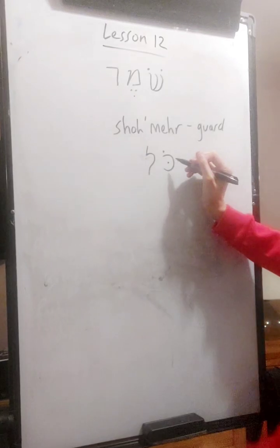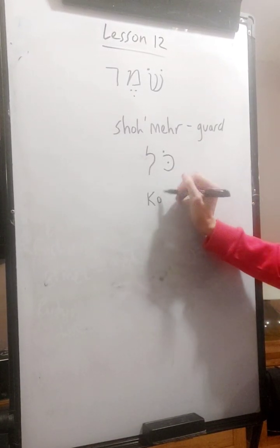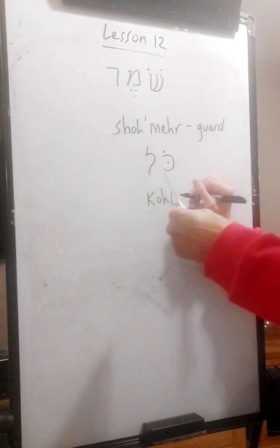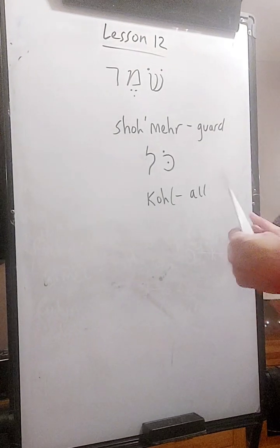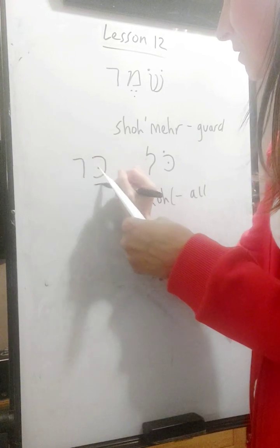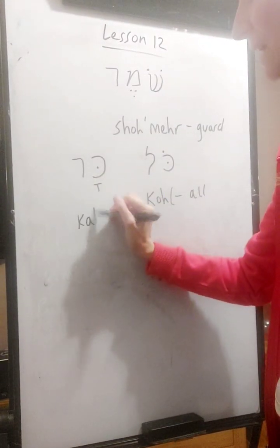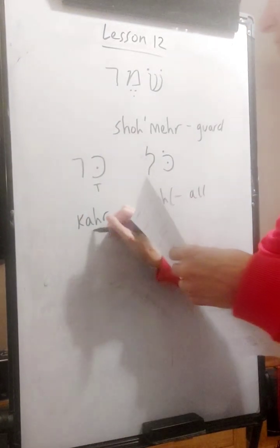Consonant sound Kaf vowel sound O consonant sound L. Kol which is all. And then we do one more. Consonant sound Kaf vowel sound A consonant sound R. Kar which is pillow.